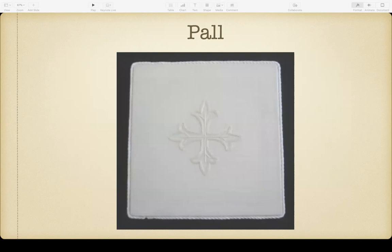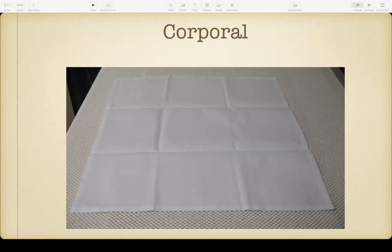A corporal is a special square linen that is folded into thirds and then thirds again, with the folds going down. The purpose of the corporal is essentially to catch crumbs — it gets its name from the root word 'corporeal,' meaning flesh. Any crumbs from the communion bread that fall on the corporal get folded up within it so they don't fall on the floor or get left on the altar after communion. We usually put this down first on the altar, then place the chalice, paten, and all other things being consecrated on top of the corporal.